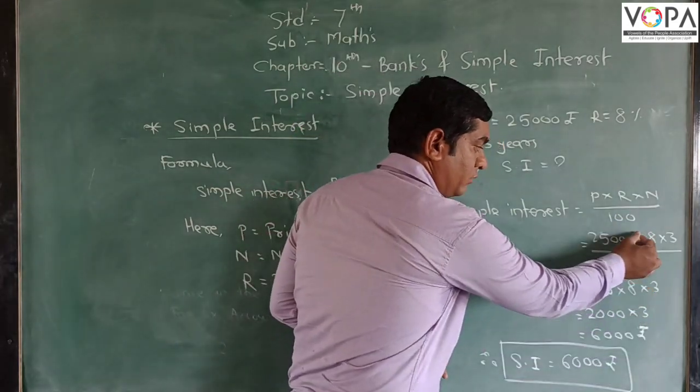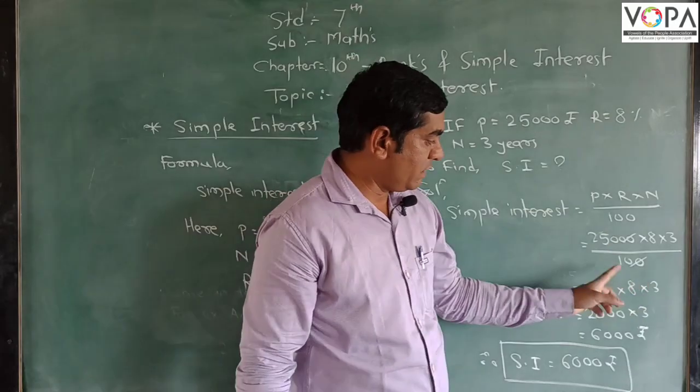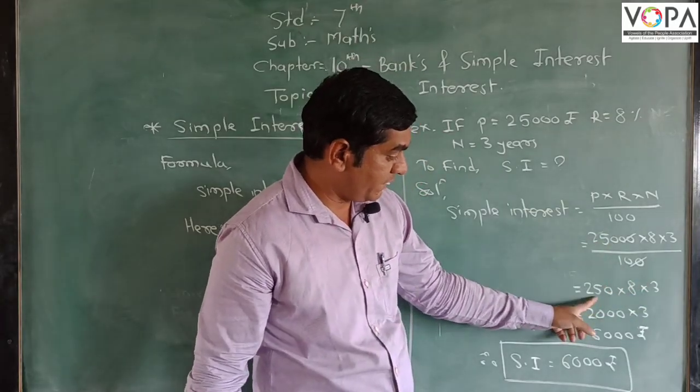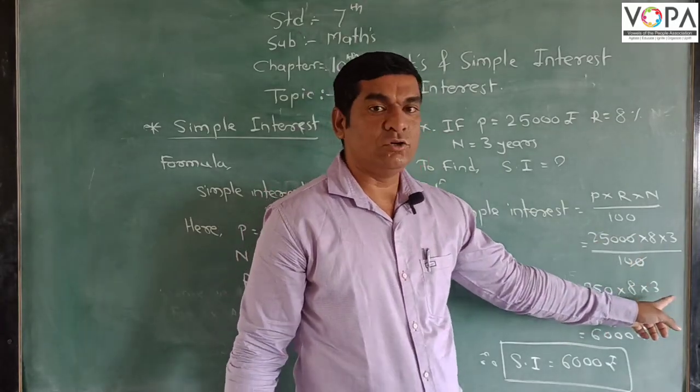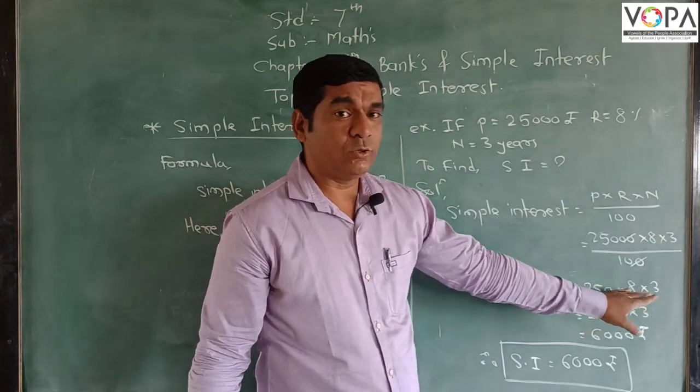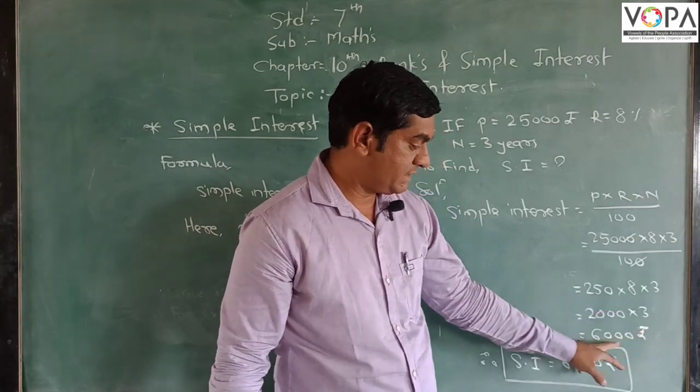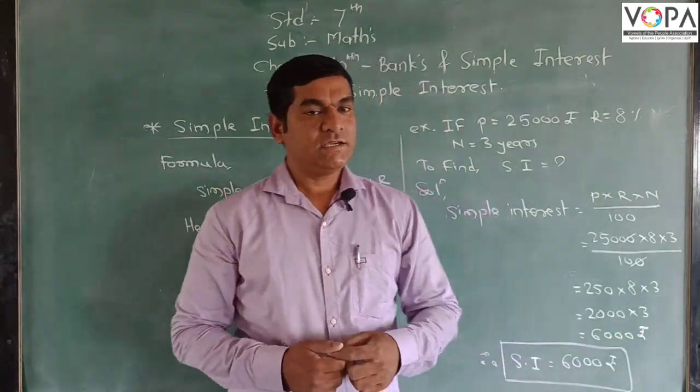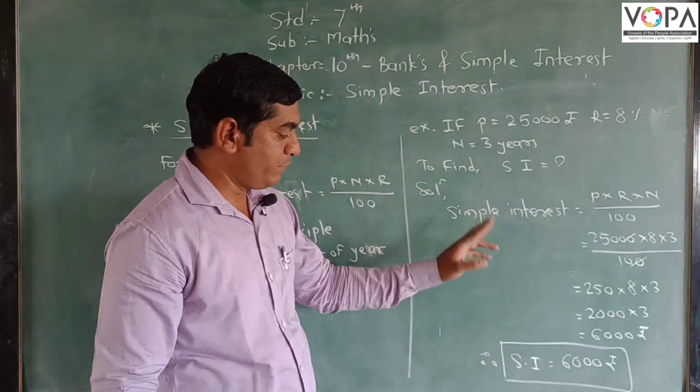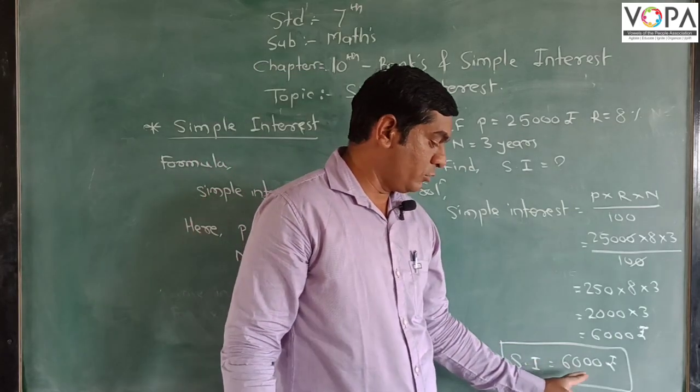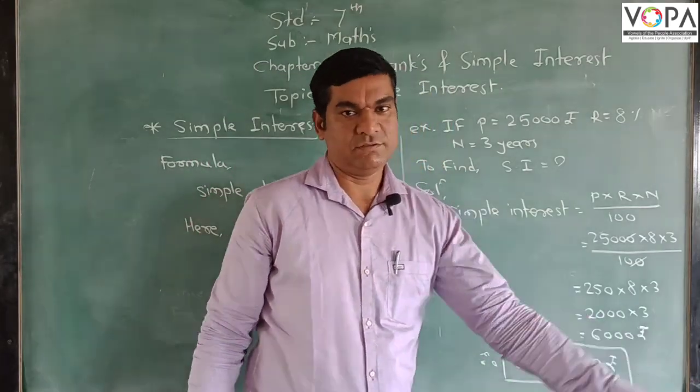So here, both zeros cut. Then the remaining amount is 250 into 8 into 3. 250 into 8 will be 2,000 and 3. Then 2,000 into 3, 6,000. So in this example, we get Simple Interest equal to 6,000.